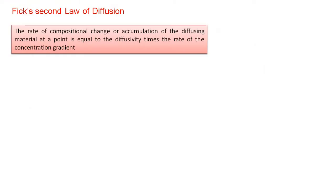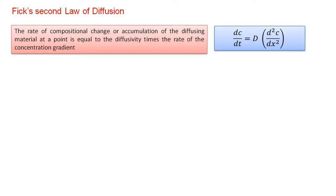First, we try to understand what Fick's Second Law talks about. Basically, it talks about the unsteady state of diffusion. It states that the rate of compositional change or accumulation of the diffusing material at a point is equal to the diffusivity times the rate of the concentration gradient. If we express it in terms of a mathematical equation, it will be: dc/dt = D · (d²c/dx²).